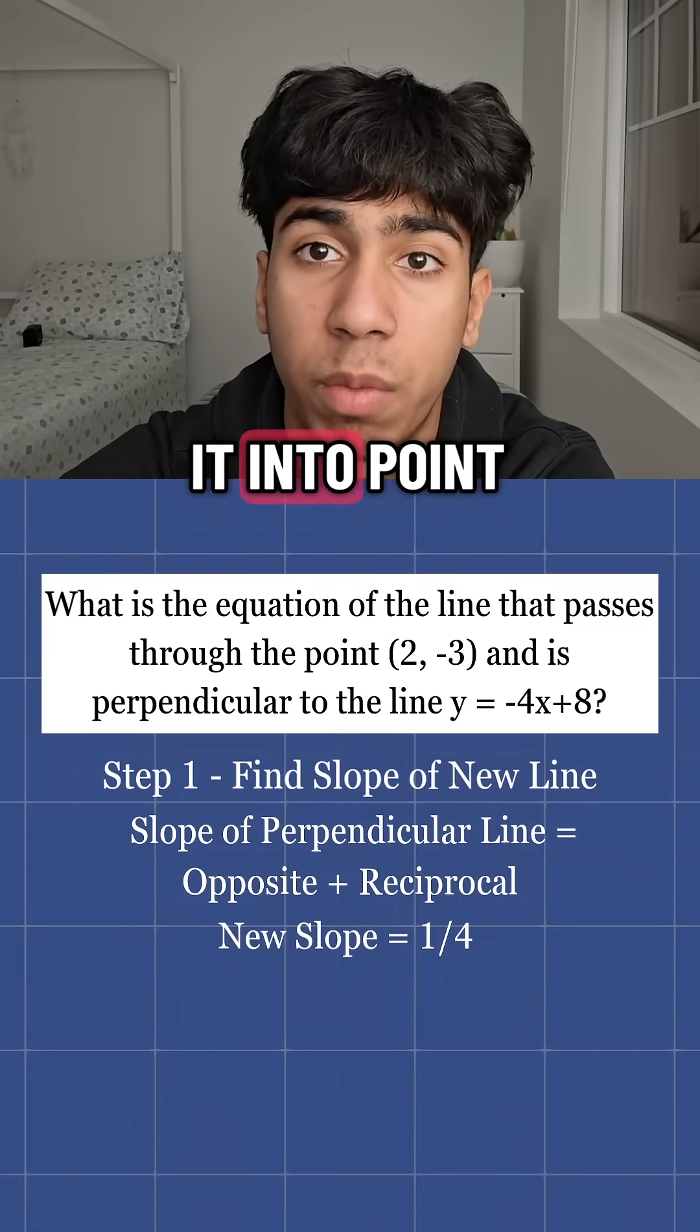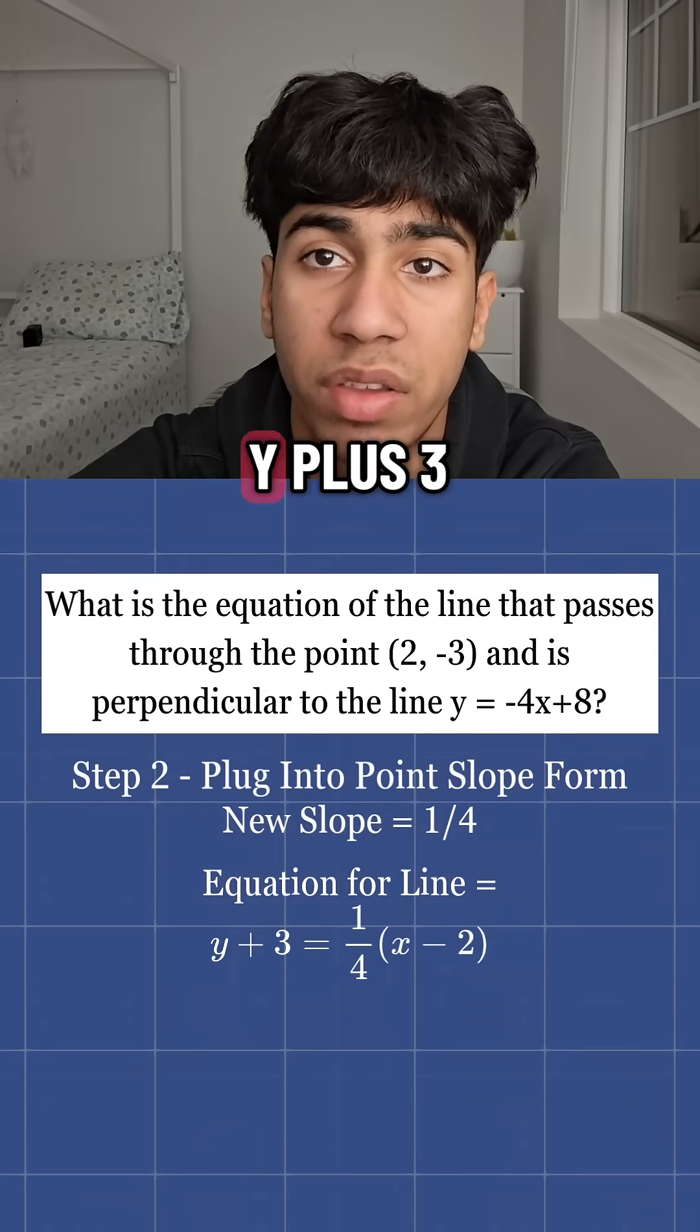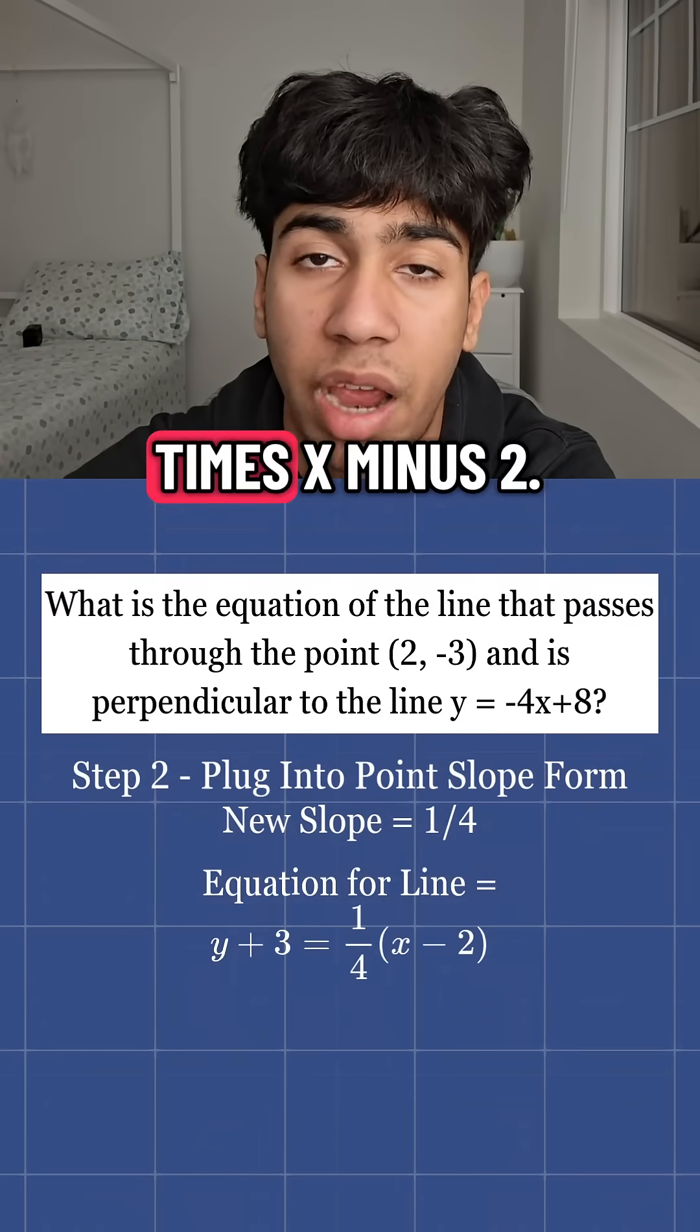Now, let's plug it into point slope form using the points 2, negative 3. y plus 3 equals 1/4 times x minus 2.